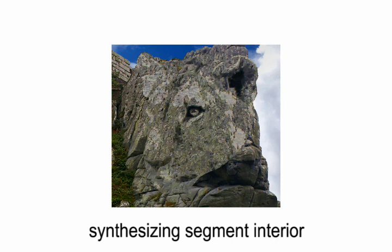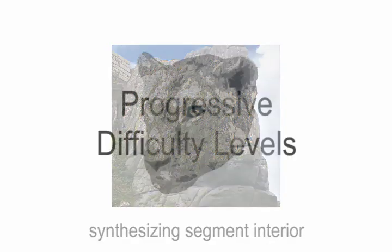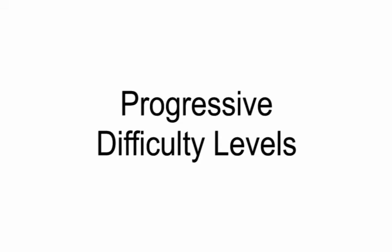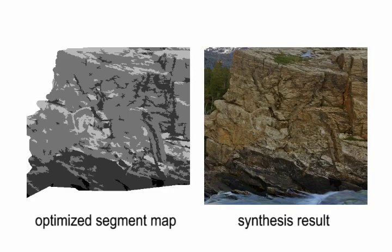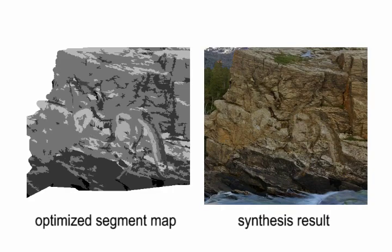By controlling the balance between immersion and standout of the object in luminance assignment, our technique allows generating camouflage images at controllable levels of difficulty. Here we show three examples of progressive difficulty levels from difficult to easy.